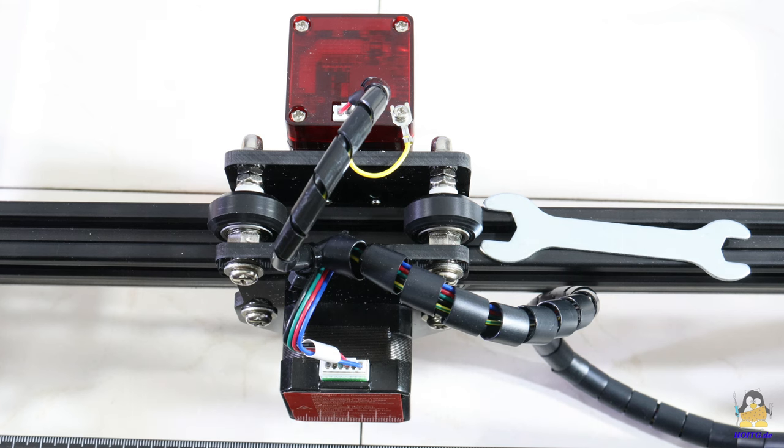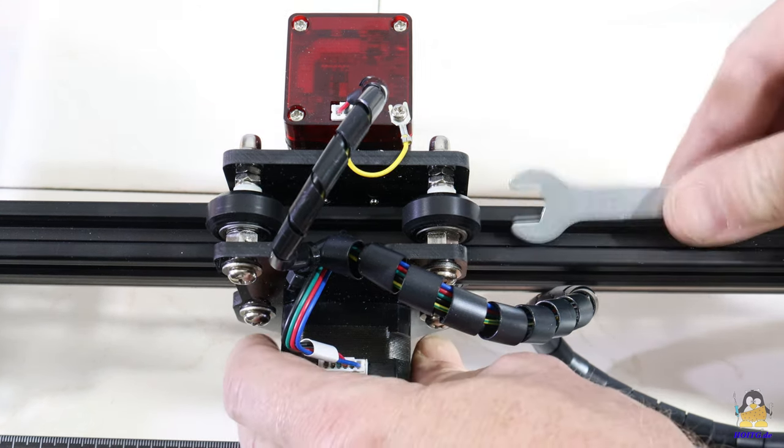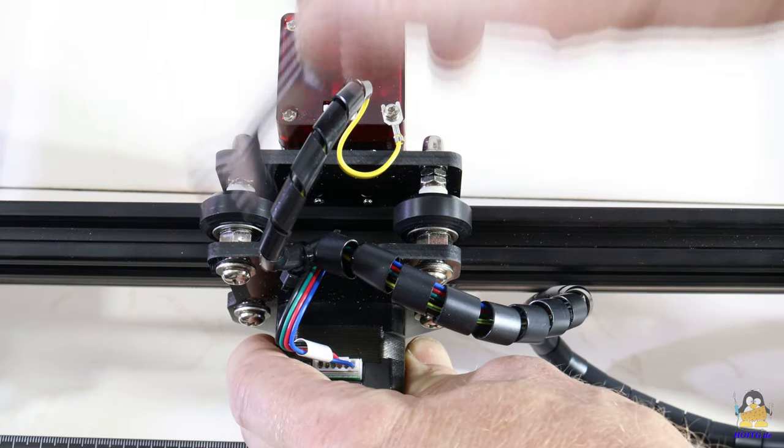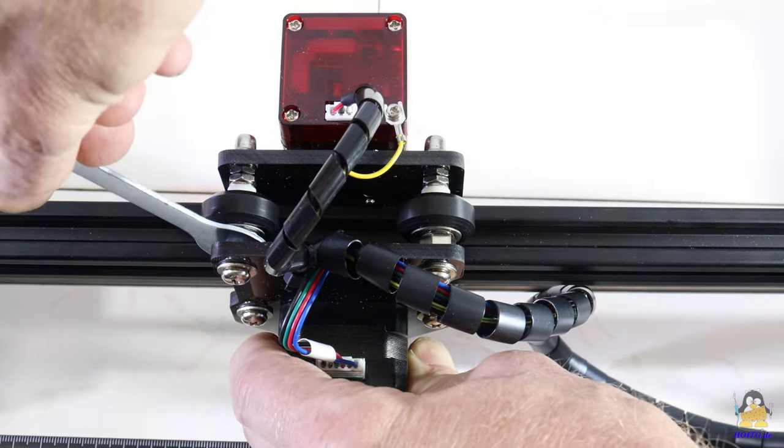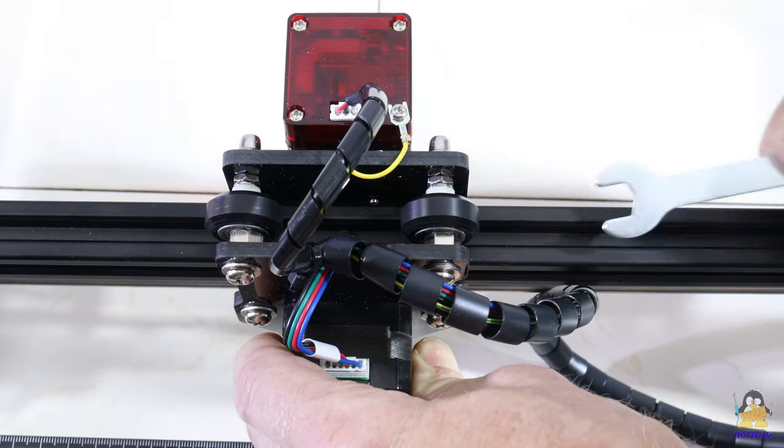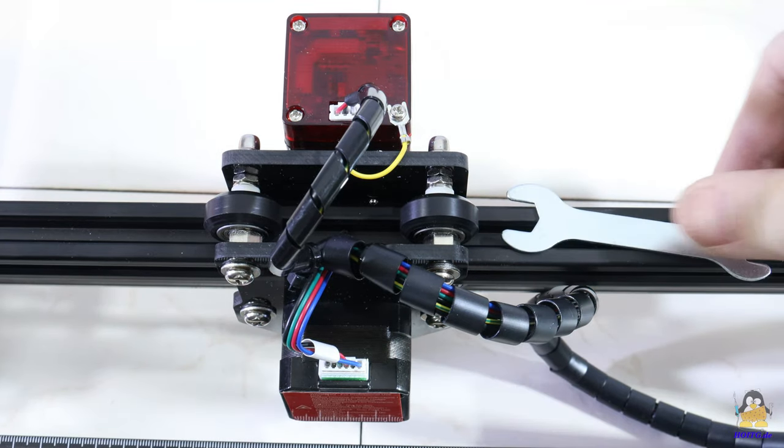The two axes are guided along extruded aluminum of the dimensions 20x20mm with the help of plastic rollers on metal ball bearings. The backlash can be minimized via eccentric nuts using the included wrench.